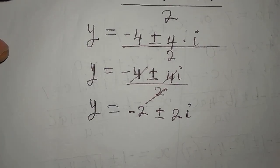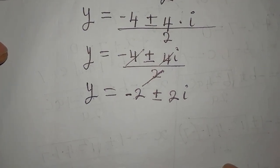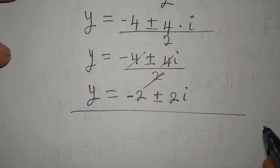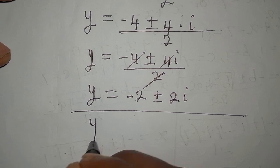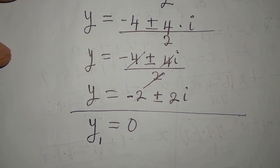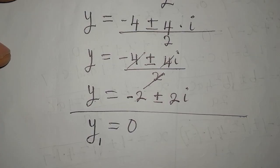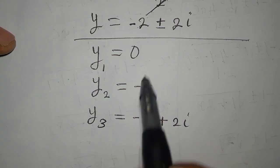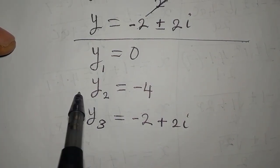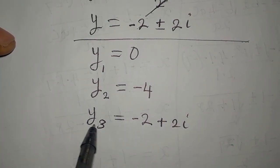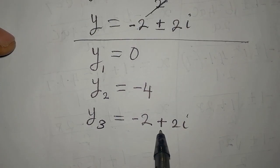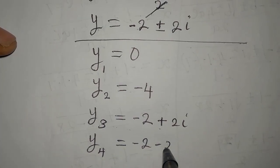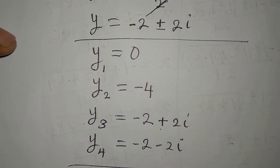Remember this is a two-in-one solution, and we got two solutions before. So let's bring all four solutions together. The first solution is y equals 0. The second solution is y equals negative 4. The third solution is y equals negative 2 plus 2i. And the fourth solution is y equals negative 2 minus 2i.